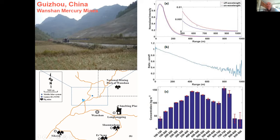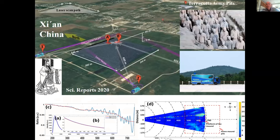We measured in the areas of Wanshan - meaning 'ten thousand mountains' in Chinese - and you can see the range-resolved curves out to one kilometer range, falling off by the 1/r² dependence, just the illumination law. The curves are different for on-resonance and off-resonance. The divided curve's slope maps out the concentration as a function of range. We found 150 nanograms per cubic meter - about a factor of 100 above typical background values - so it is quite polluted.